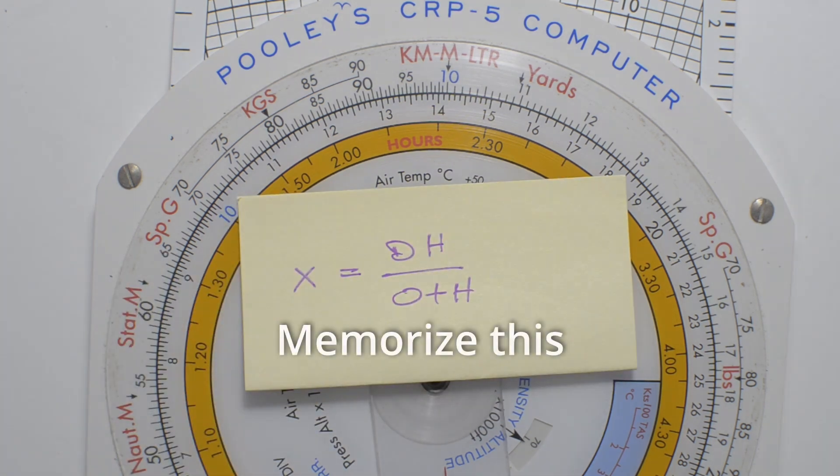There is a formula for calculating the distance out to the critical point. However, we will be solving today's problem using the CRP-5 first, and then we'll compare it against the calculated method for arriving at this distance. If you're familiar with both, you can use either method to check your working using the other method.